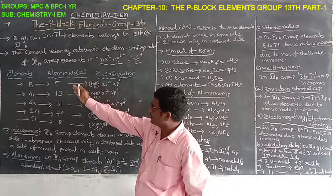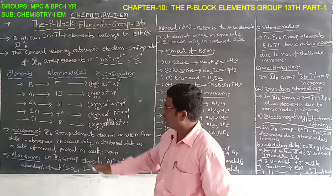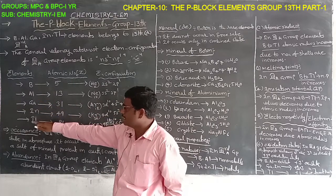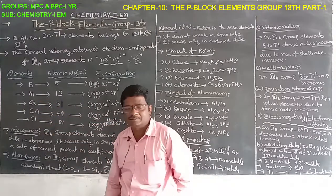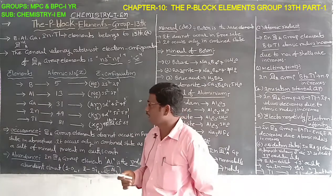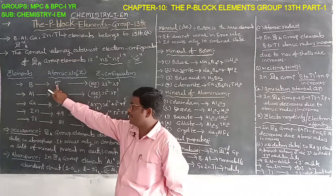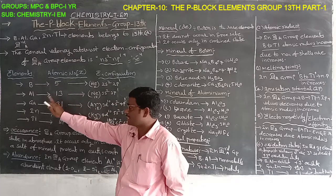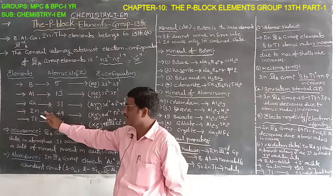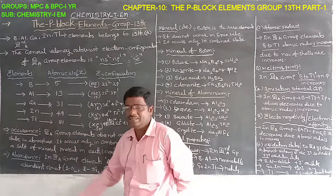In 3rd A group elements — boron, aluminium, gallium, indium, and thallium — the atomic numbers are: boron 5, aluminium 13, gallium 31, indium 49, and thallium 81.